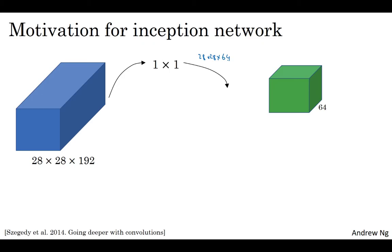But maybe you also want to try a 3x3, and that might output a 28 by 28 by 128. What you do is just stack up this second volume next to the first volume. To make the dimensions match up, let's make this a same convolution so the output dimension is still 28 by 28, same as the input dimension in terms of height and width.